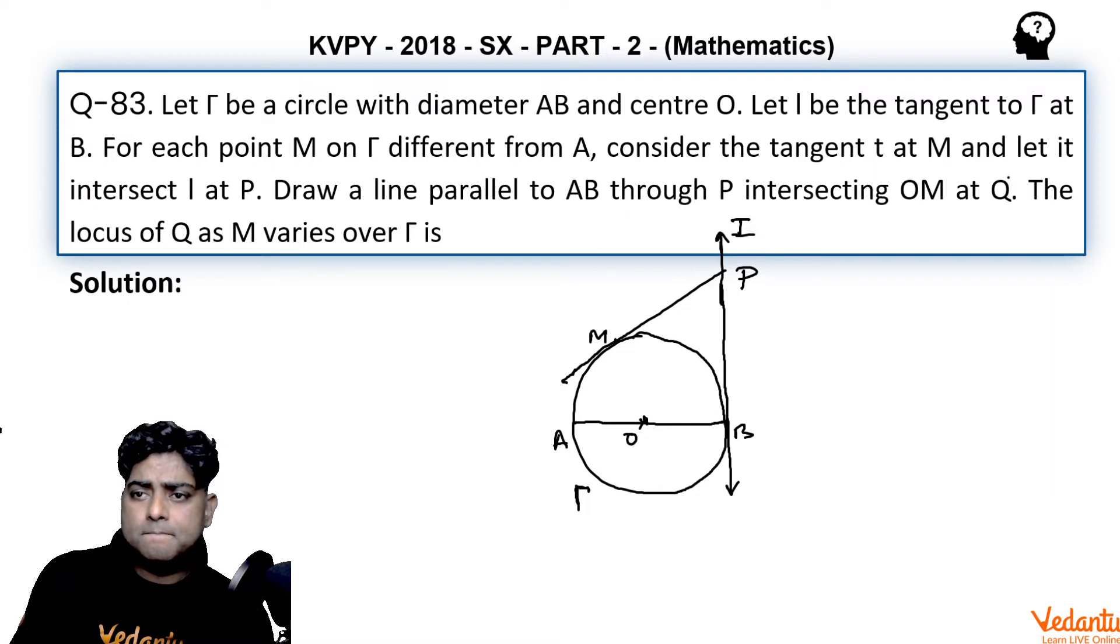Then we have to draw a line parallel to AB through P, so I am drawing a line parallel to AB through P, and it intersects OM at point Q.